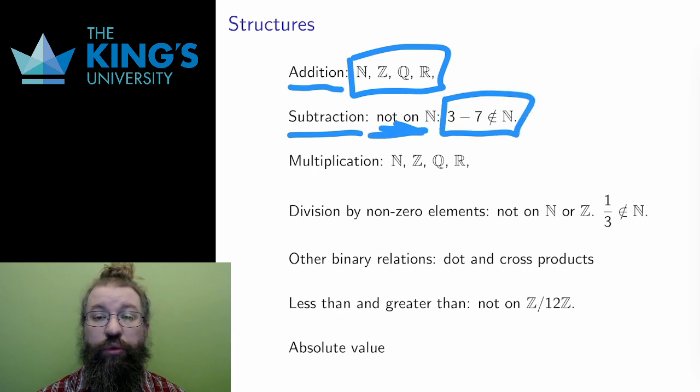The subtraction 3-7 does not live on this set, because its result is not a positive whole number.